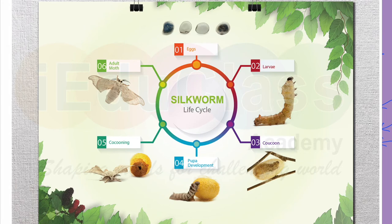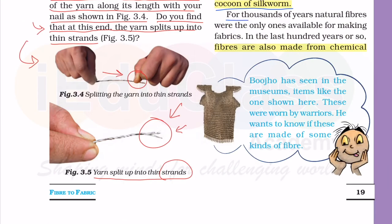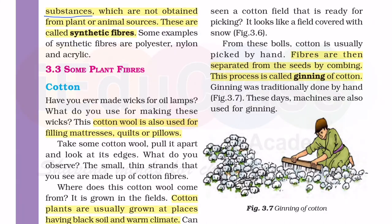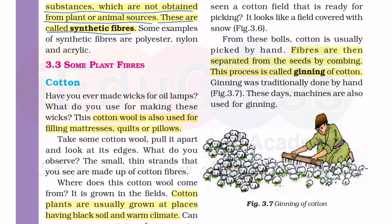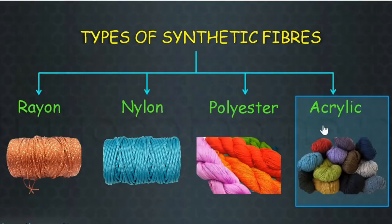For thousands of years, natural fibers were the only ones available for making fabrics. In the last hundred years or so, fibers are also made from chemical substances which are not obtained from plant or animal sources - these are called synthetic fibers. इसे synthetic fibers कहते हैं - for example, Polyester, Nylon and Acrylic.